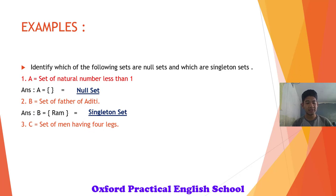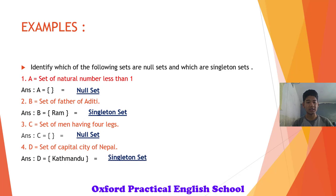Number 3. Set C, set of men having 4 legs. It is impossible to see any men having 4 legs. Therefore, set C is an empty set because there are no elements. Number 4, set D, set of capital city of Nepal. We know that there is only one capital city in every country and that is Kathmandu in Nepal. Since there is only one element, it is also a singleton set.